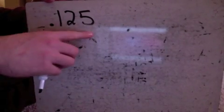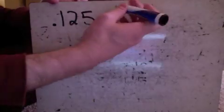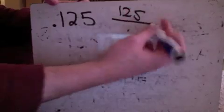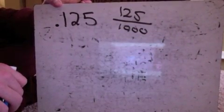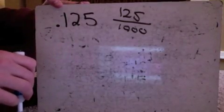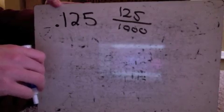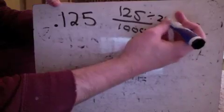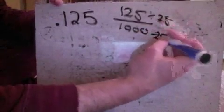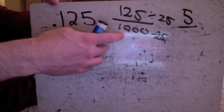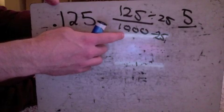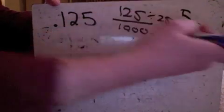The next example is 0.125, which is one hundred and twenty-five thousandths. Written as a fraction it's 125/1000. To reduce, I'll start by dividing by twenty-five. One hundred twenty-five divided by twenty-five is five. For one thousand: there are four twenty-fives in one hundred, and ten hundreds in a thousand, so that's forty. That gives us 5/40.